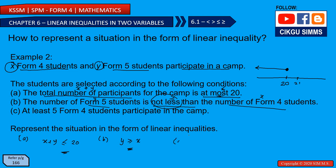Condition C: at least five Form 4 students participate — so we are talking about x. 'At least five' means the minimum is five; it can be five, six, seven, or eight. On the number line, shade 5 and go right. So x ≥ 5. The number of Form 4 students must be greater than or equal to five.